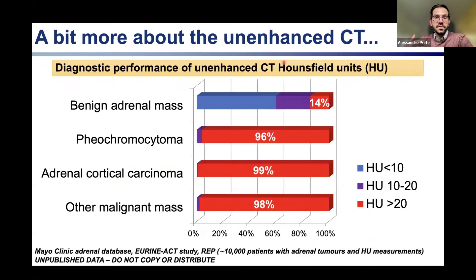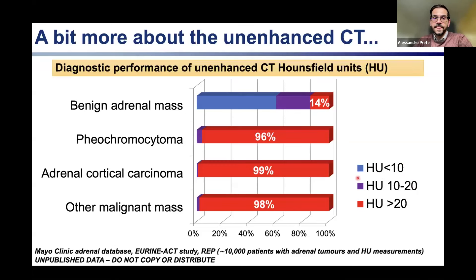To illustrate this, I have unpublished data from Birmingham and Mayo Clinic in the US, collecting over 10,000 patients with adrenal tumors who had unenhanced Hounsfield unit measurements. You can see the distribution of diagnoses — benign tumors, pheochromocytomas, adrenal cancer, and other malignant masses, primarily adrenal metastasis. The vast majority of benign adrenal masses have Hounsfield units below 10, with only a minority above 20. In contrast, for all other diagnoses — pheochromocytoma, cancer, metastasis — Hounsfield units above 20 are by far the most common finding, and none of these masses have Hounsfield units below 10.